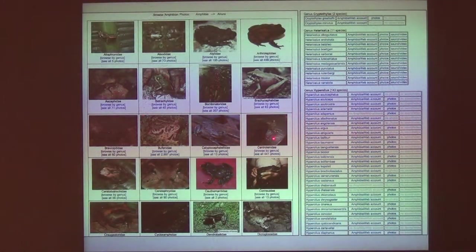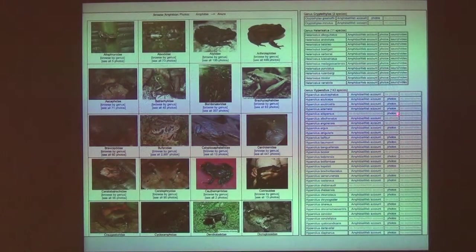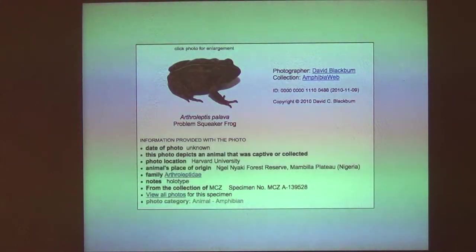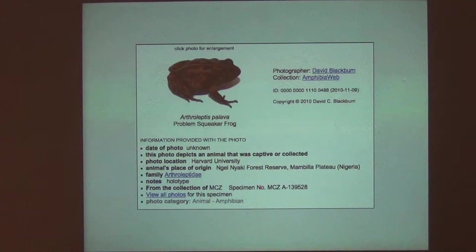AmphibiaWeb, which we'll talk about later as a resource, has many images organized in different ways, and all of these images are actually submitted by photographers like you and I. When you browse their data you can see the names and whether there's a written account about those species, but also photos and sound recordings submitted by us. Here's a photo I submitted — an image of a frog in the field that has a locality, notes that it's the holotype, has a specimen record and things like that, so you can upload this sort of metadata.